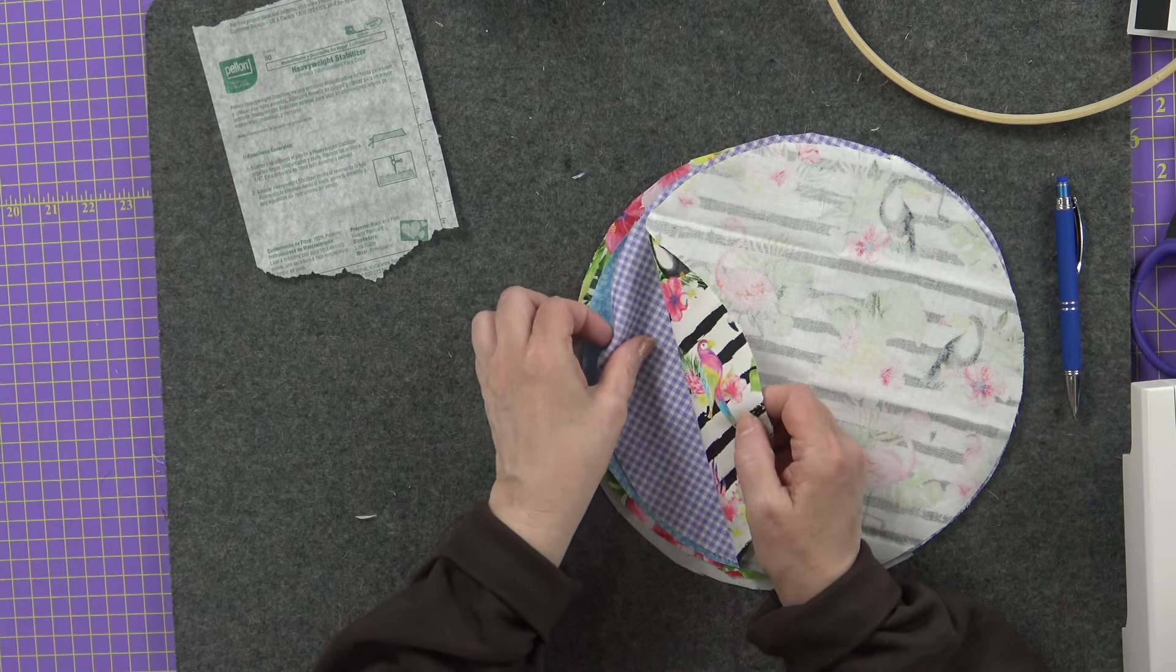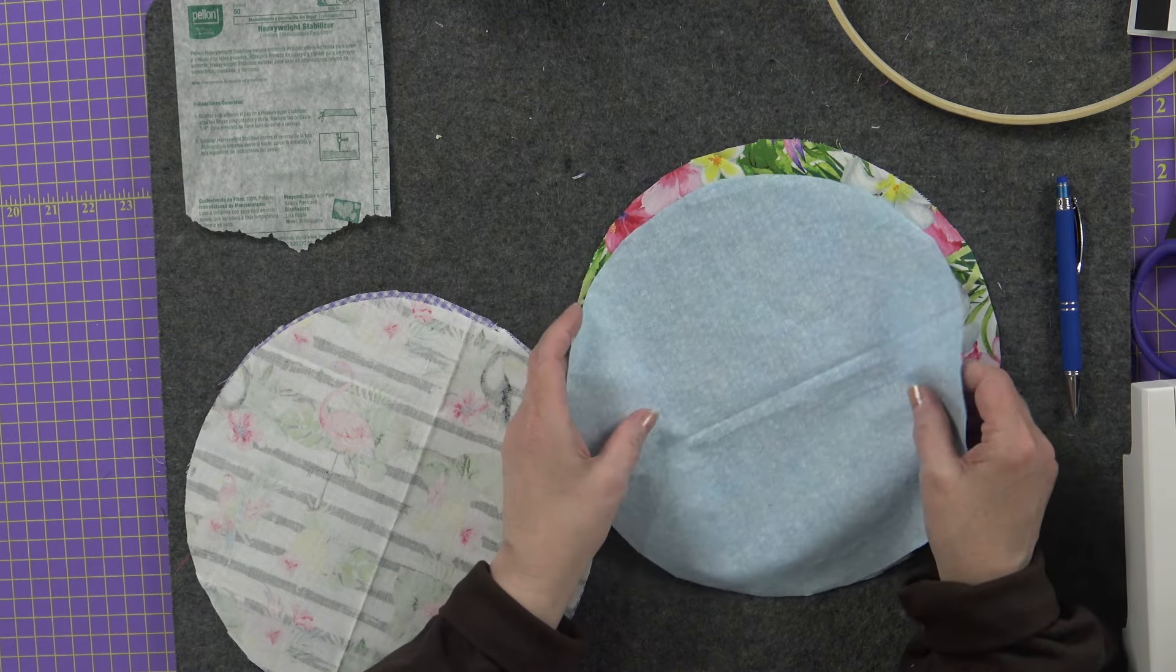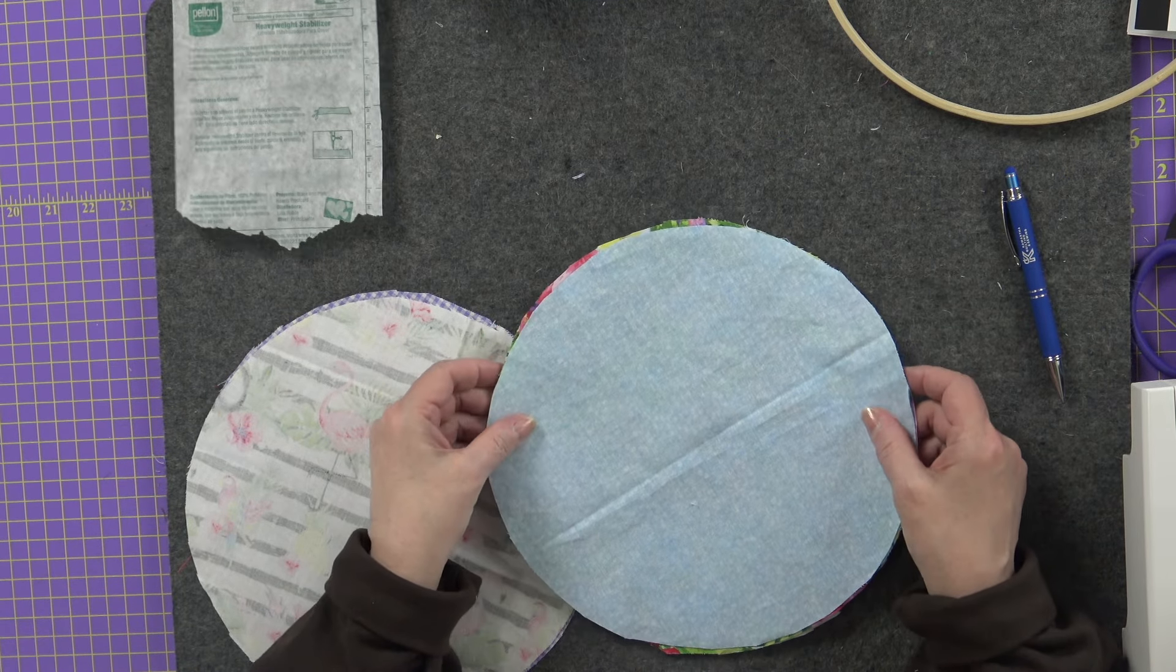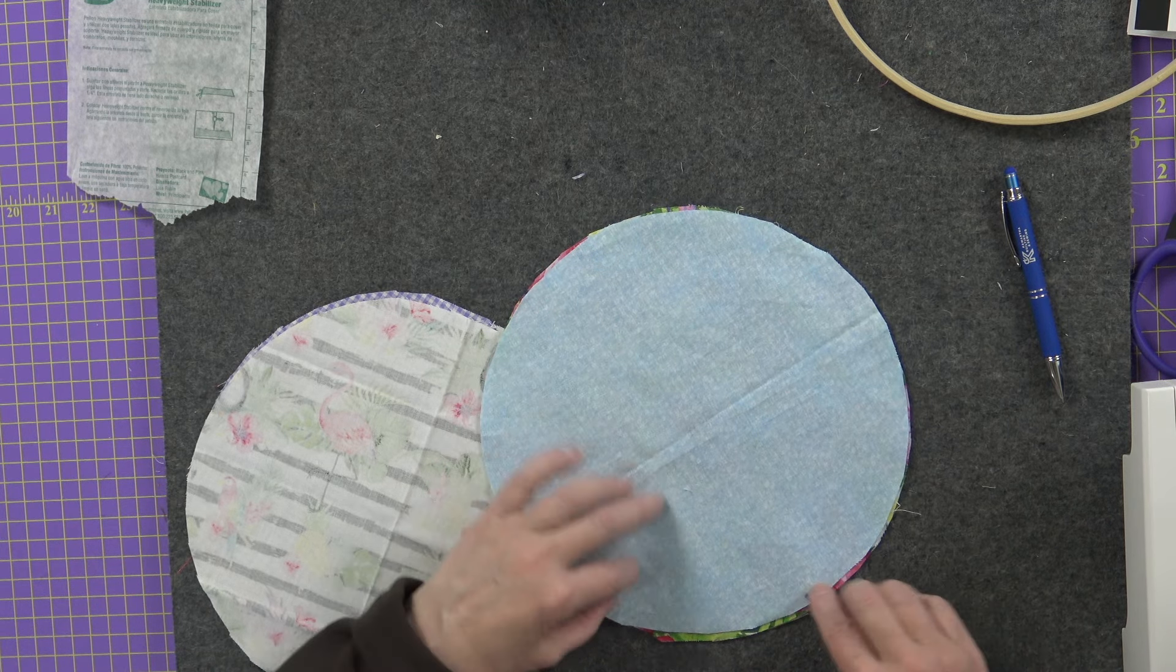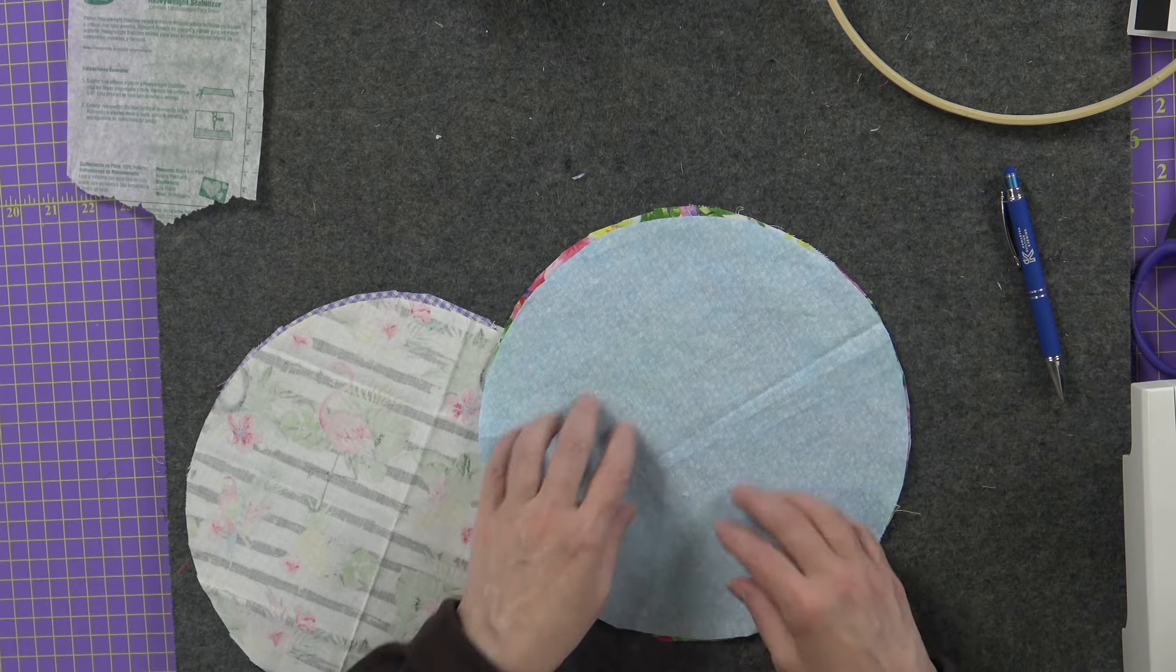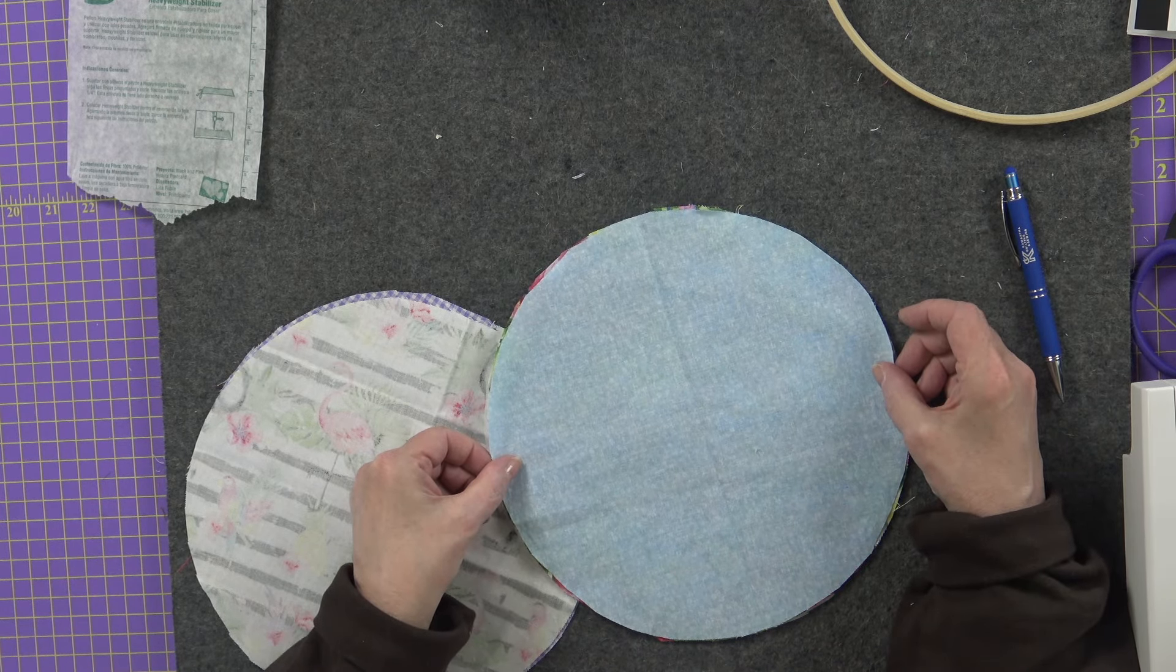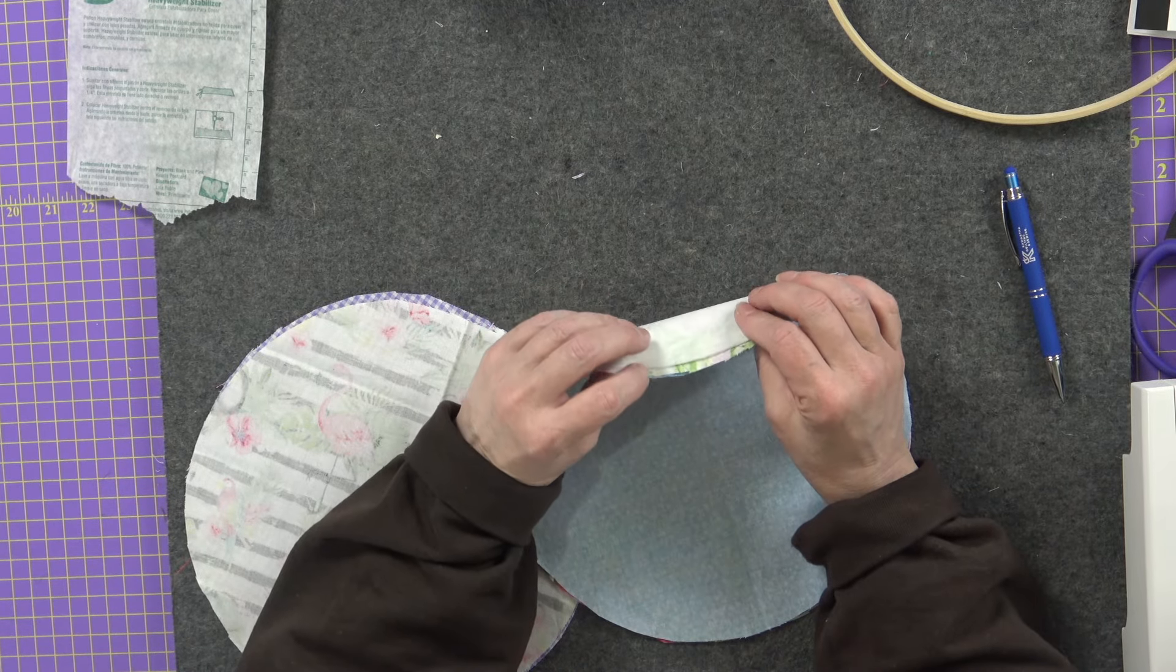So of course we're going to go with the right sides together for the fabrics. And then on one of the sides, the back side, you're going to make sure you add the stabilizer. And then you're going to take it to the sewing machine and you're going to sew a quarter of an inch. Just follow the edge all the way around.